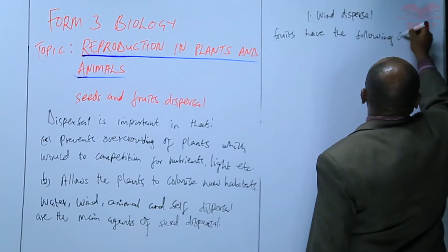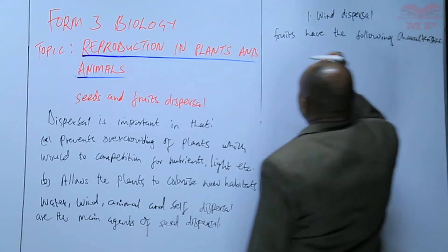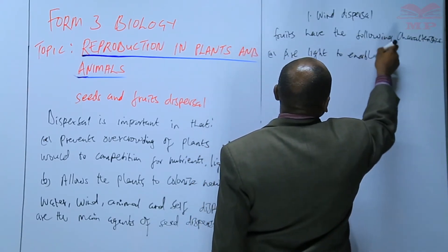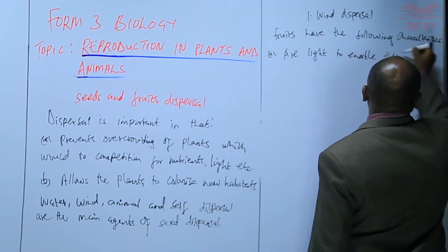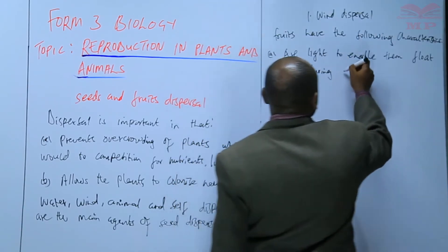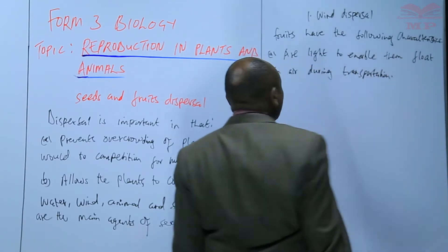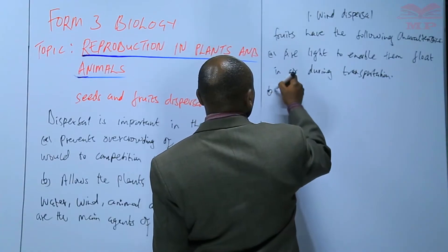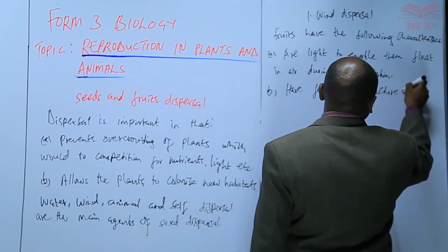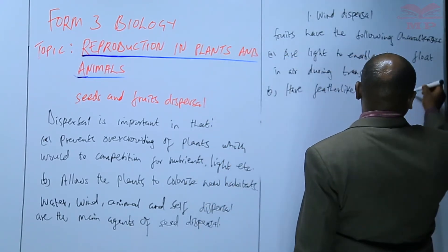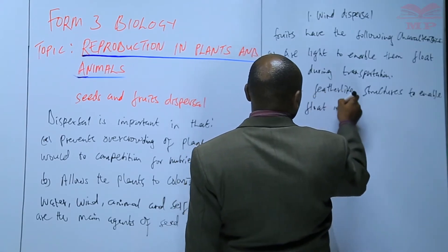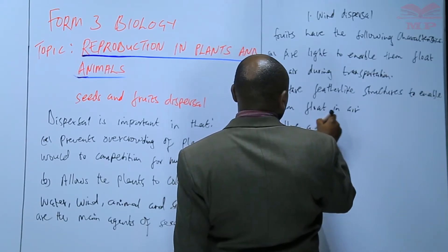The wind-dispersed fruits have the following characteristics: they are light to enable them to float in air during transportation. They also have a feather-like structure, and others have a wing-like structure, also to enable them to float.